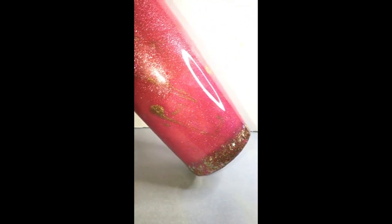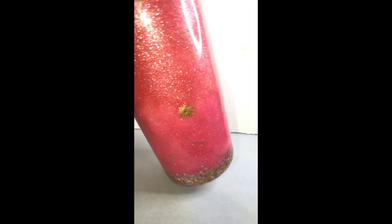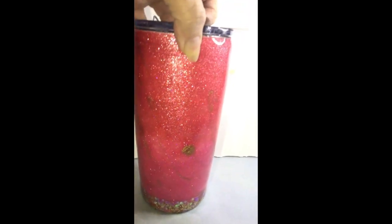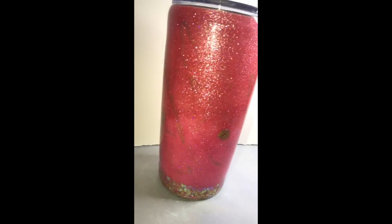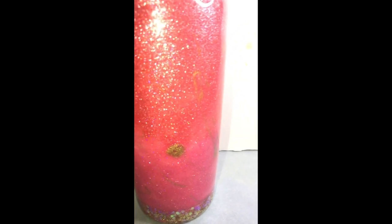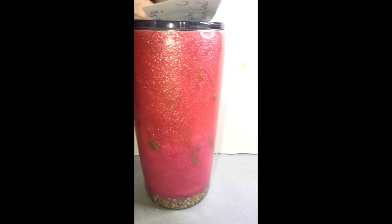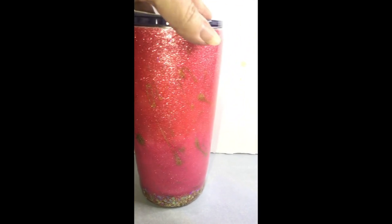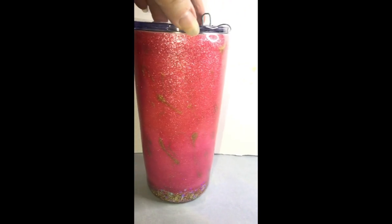But look at the sparkle on this thing. Please excuse the ring light. There is no glitter in here. I did not use any glitter. This is the luster pigment. Is it not absolutely beautiful? It's so shimmery. It doesn't matter what angle the light hits it. It just looks so rich and deep.